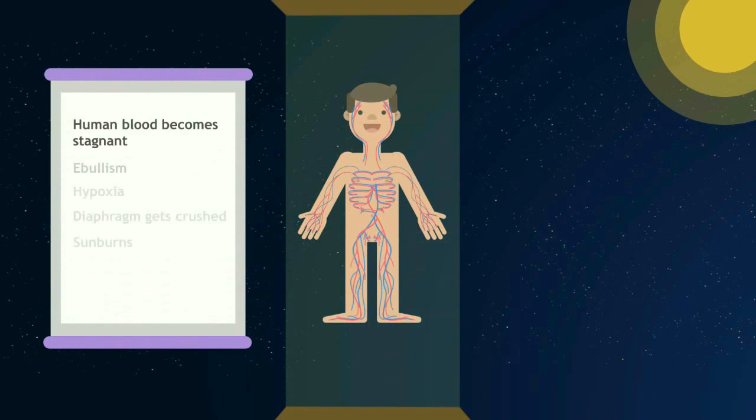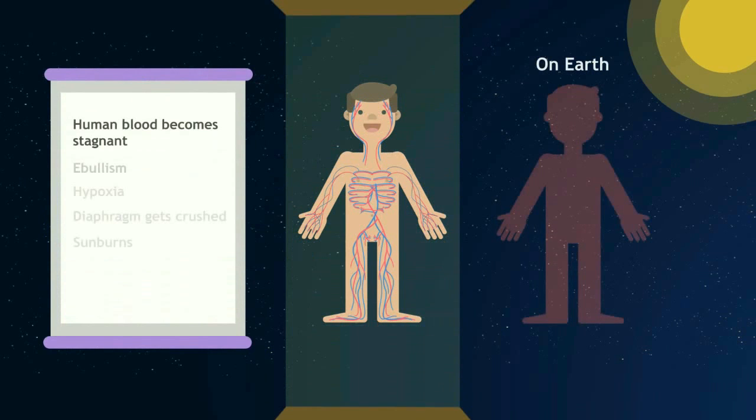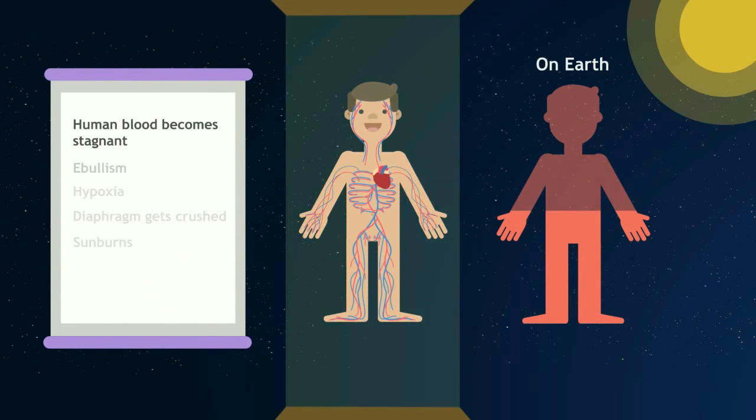Human blood becomes lazy in outer space. Humans have evolved according to earth's gravity. With gravity on earth, the lower parts of the body easily gets more blood while the upper parts of the body gets less as blood needs to flow against gravity. Thus, we have the heart placed near the head so that the heart needs to do the least work to get the blood up into the head.